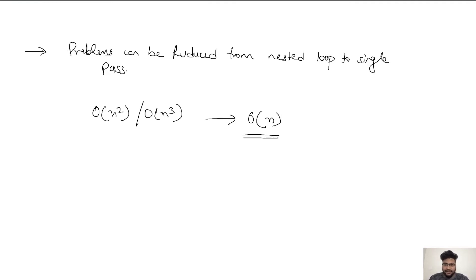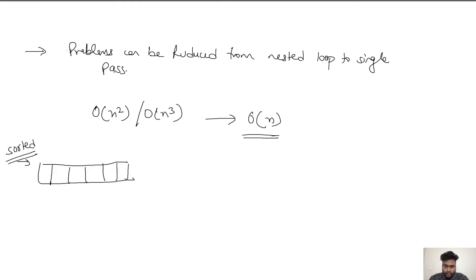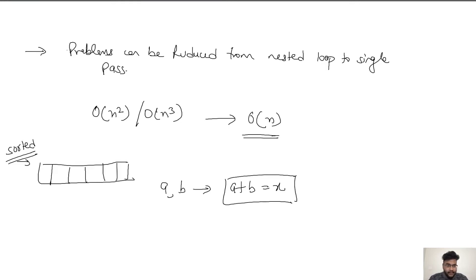A simple example: suppose we are given a sorted array with some values, and we have to find two different values A and B which sum up to a specific value X. We have to find the indexes of A and B in the array. This kind of problem can be solved via two pointer — we'll see exactly how in later sessions.